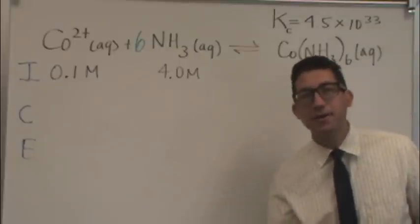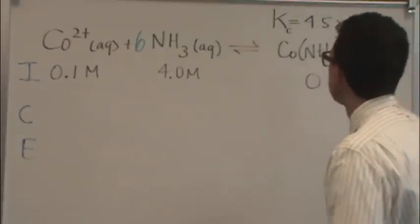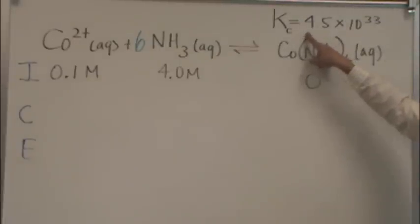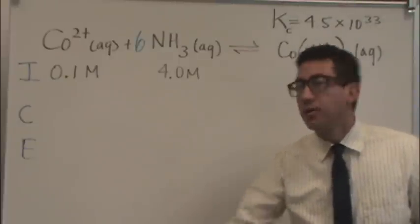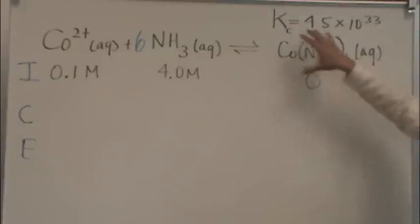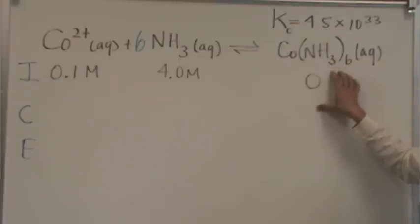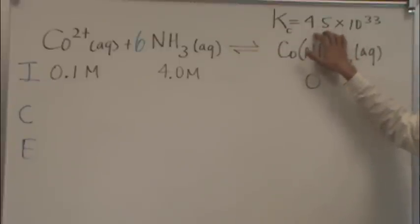However, there's a problem. Let me show you what the problem is. See this Kc? It's extremely large. 4.5 times 10 to the 33. That means which side is favored? The right side. Heavily favored on the right-hand side because K is so large.